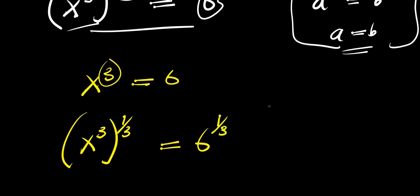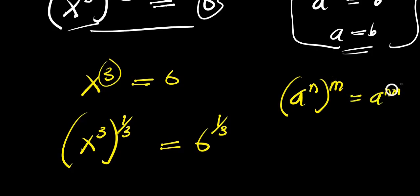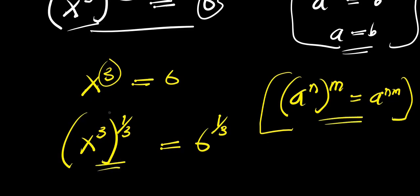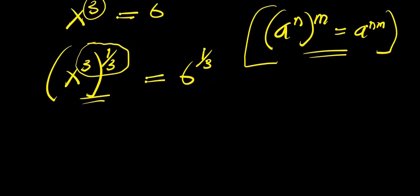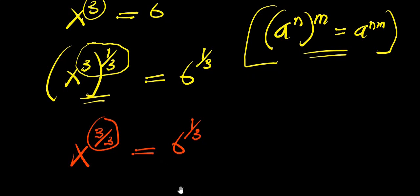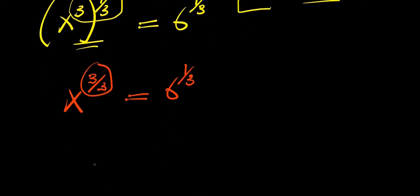This leads us to the identity again: we have a power n raised to the power of n, this equals a power of n times n. Applying this, I multiply the exponents: x to the power of 3 times 1 over 3, that is 3 over 3, equals 6 power 1 over 3. And 3 over 3 is 1, so we have x equals 6 power 1 over 3.